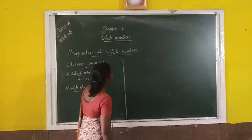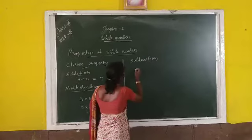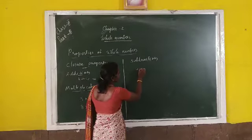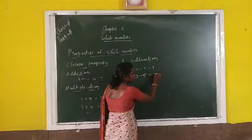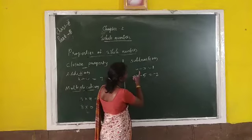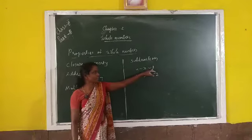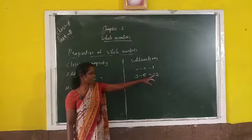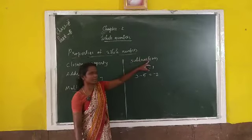Now look at subtraction and division. In subtraction, 4 minus 3 equals 1, which is a whole number. But 3 minus 5 equals negative 2, which is not a whole number. So when we subtract any two whole numbers, we may or may not get a whole number. Therefore, whole numbers are not closed under subtraction.